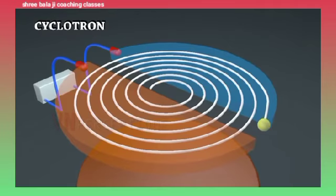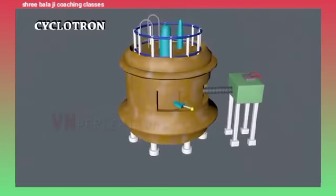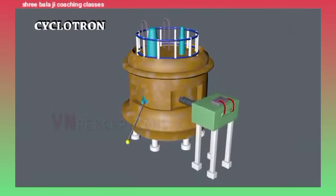Finally, when the particle has no more space to grow in radius, it is thrown out through a window. With such a high velocity, the particle has high energy and it hits the target.